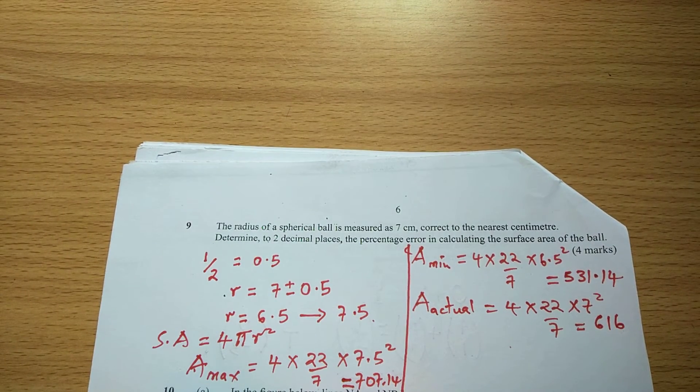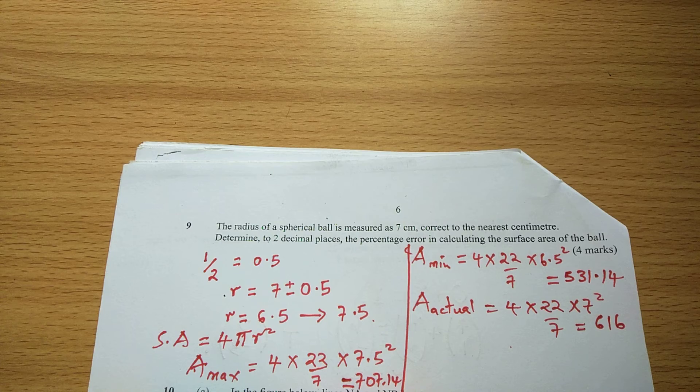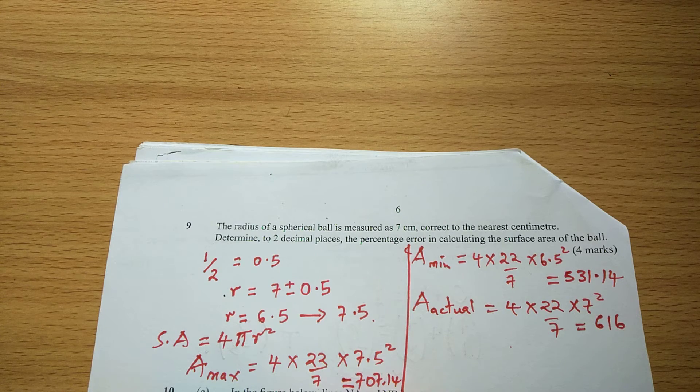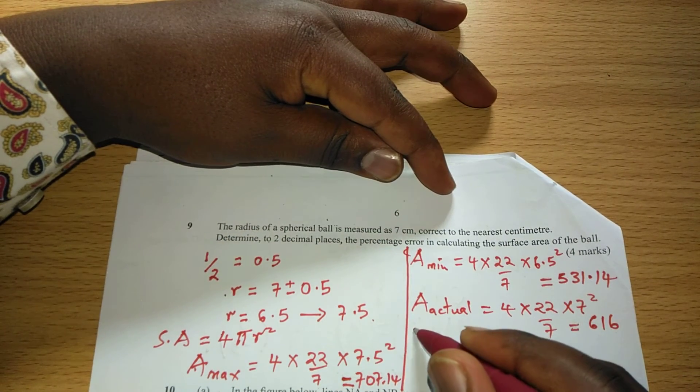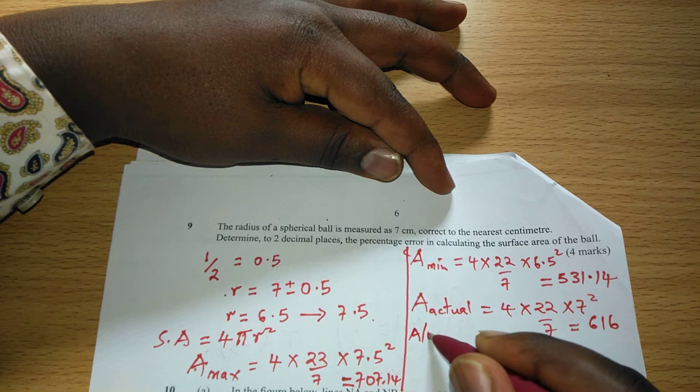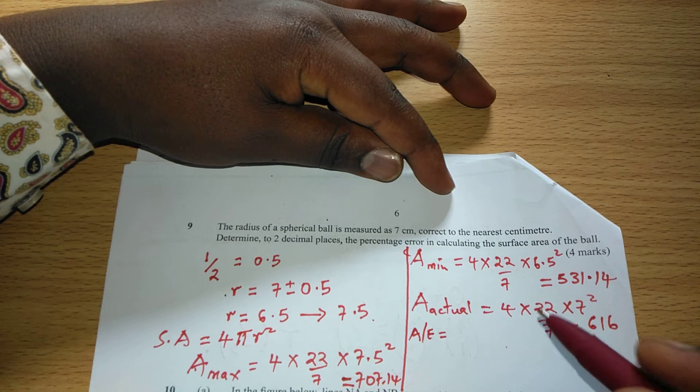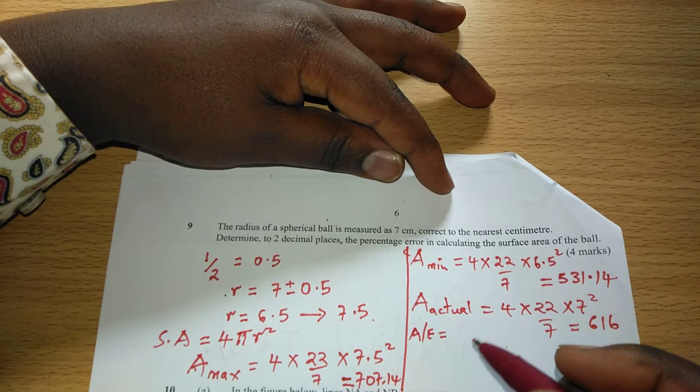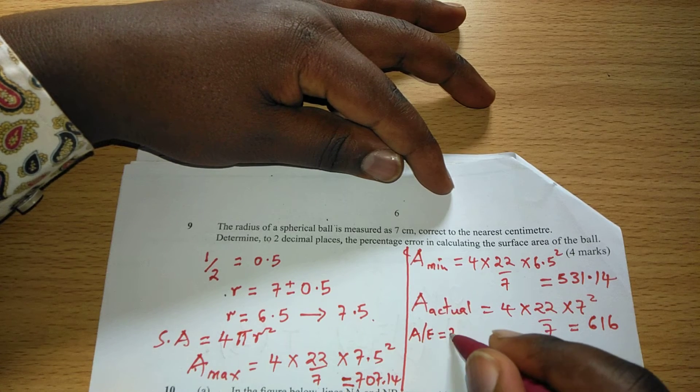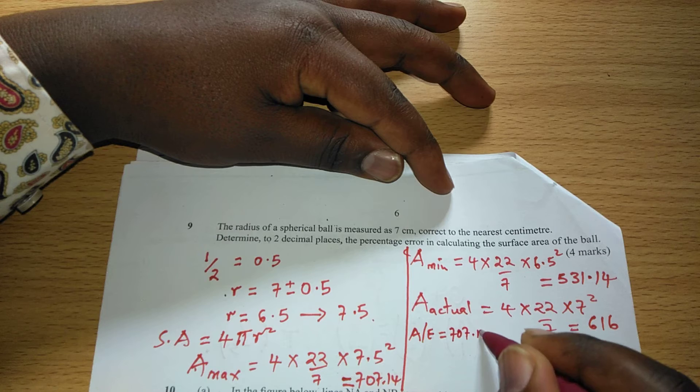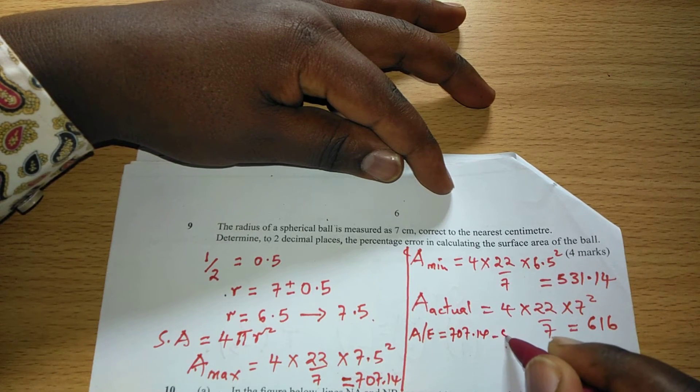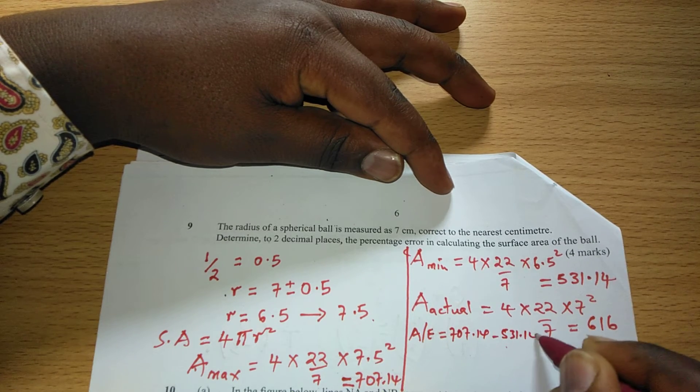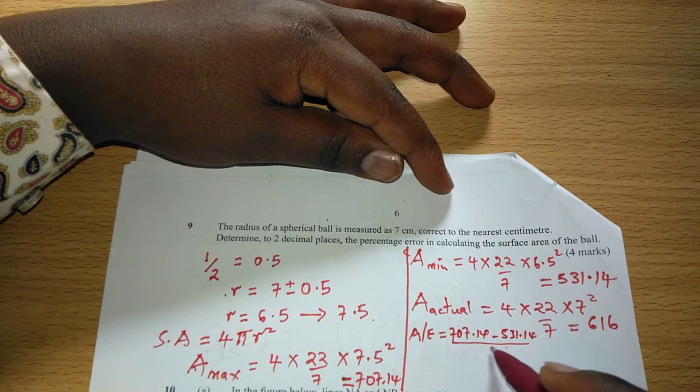So for us to get what we call the absolute error in the area, this one is calculated by maximum subtracted from minimum then divided by 2. Therefore when we get 707.14 and we subtract 531.14 then we divide those figures by 2.